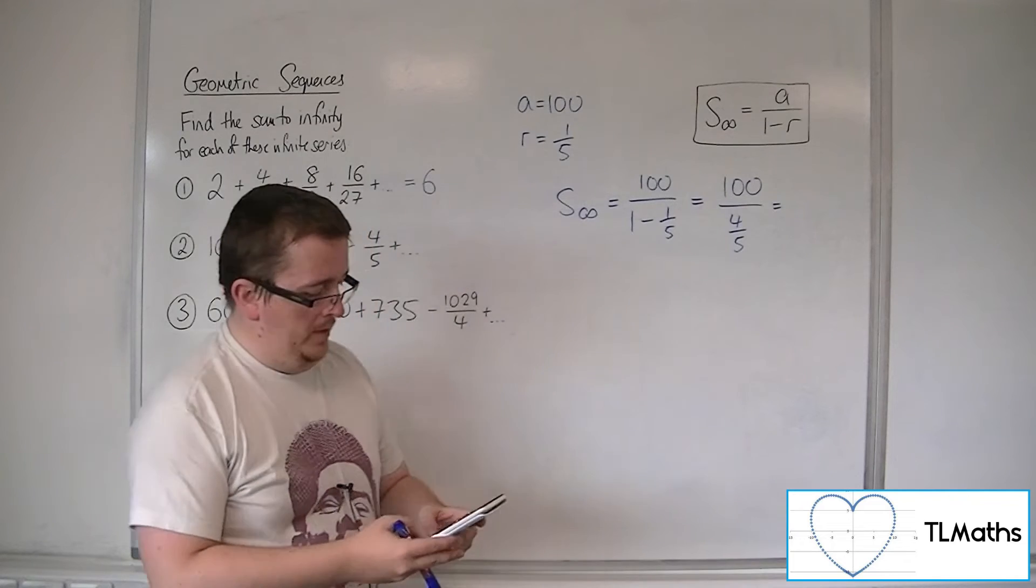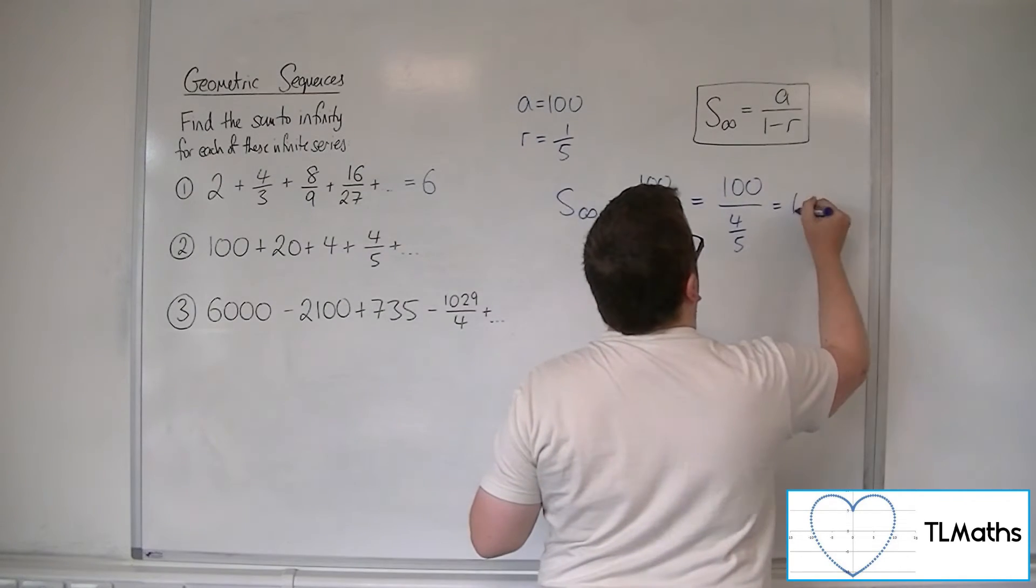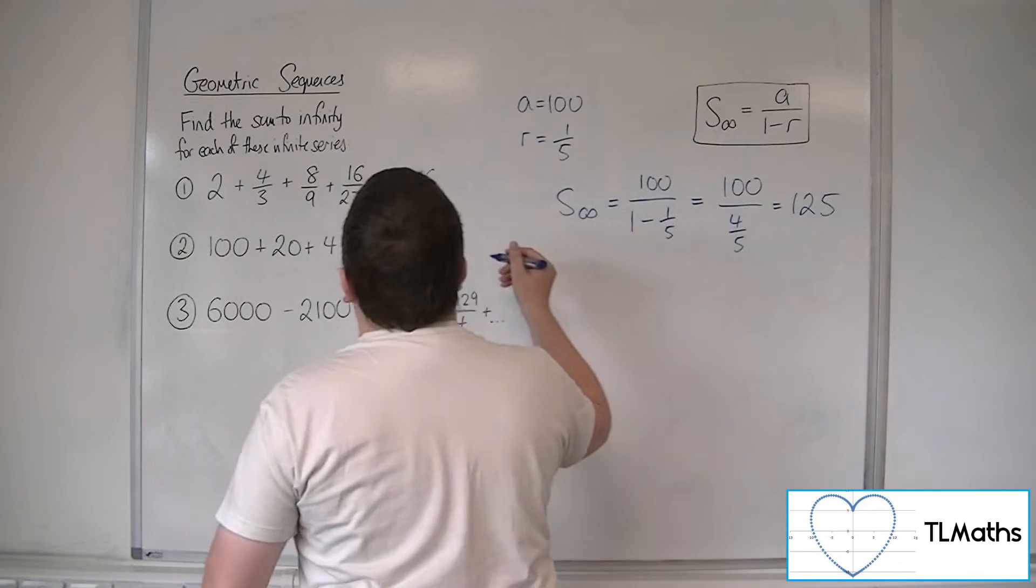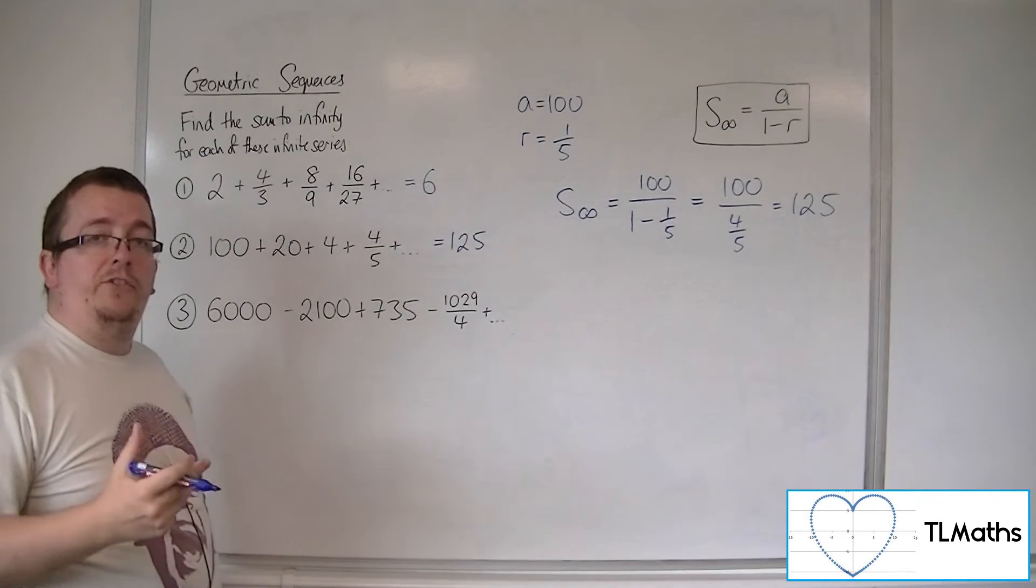So 100 divided by 4 fifths is 125. And so this infinite series adds to 125.